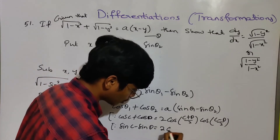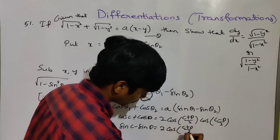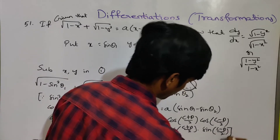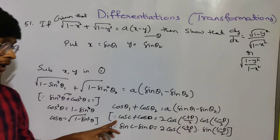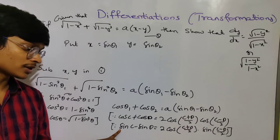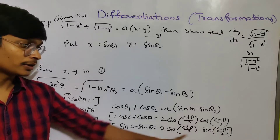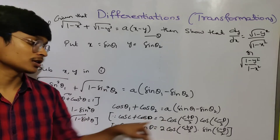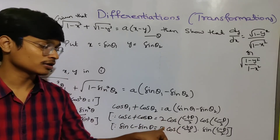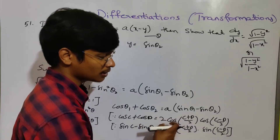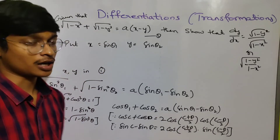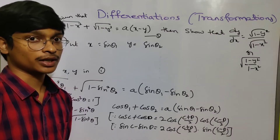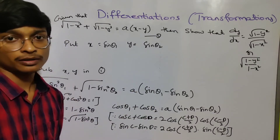For sin C - sin D, we have 2 cos((C+D)/2) · sin((C-D)/2). This is the formula. And sin C + sin D gives a different form. These are all the formulas. I will make shortcuts and apply a formula to help solve the problem easily.